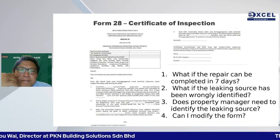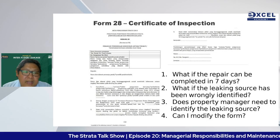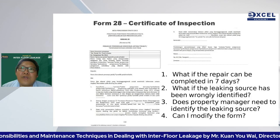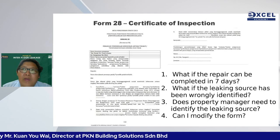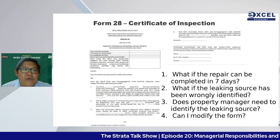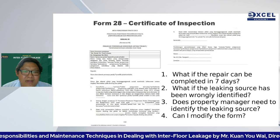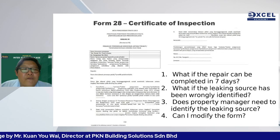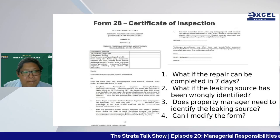Form 28 must be issued after full inspection of upstairs and downstairs. There is a legal presumption that water travels from top to bottom. Do not delay issuing Form 28 or add a 'friendly notice' step — failing to comply with the SOP of the Strata Management Act can make you subject to being sued at the Tribunal. Do not create your own SOP; follow the law step by step.